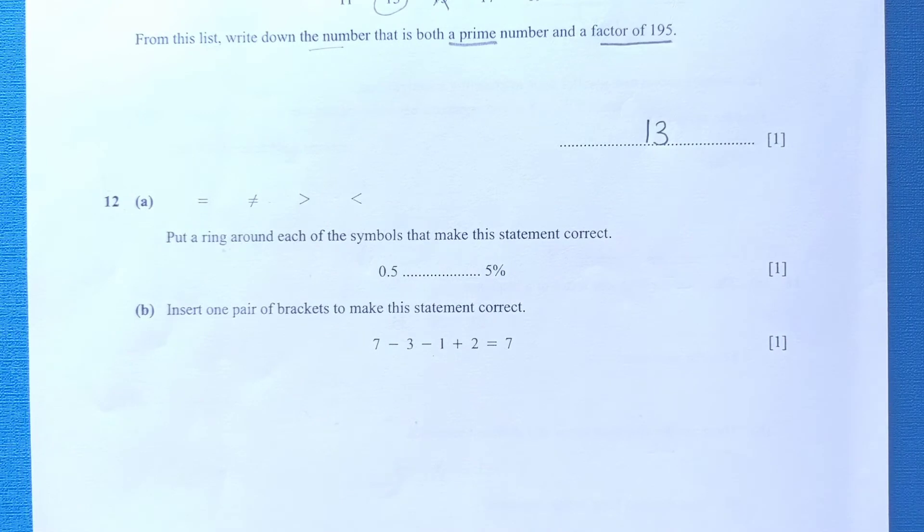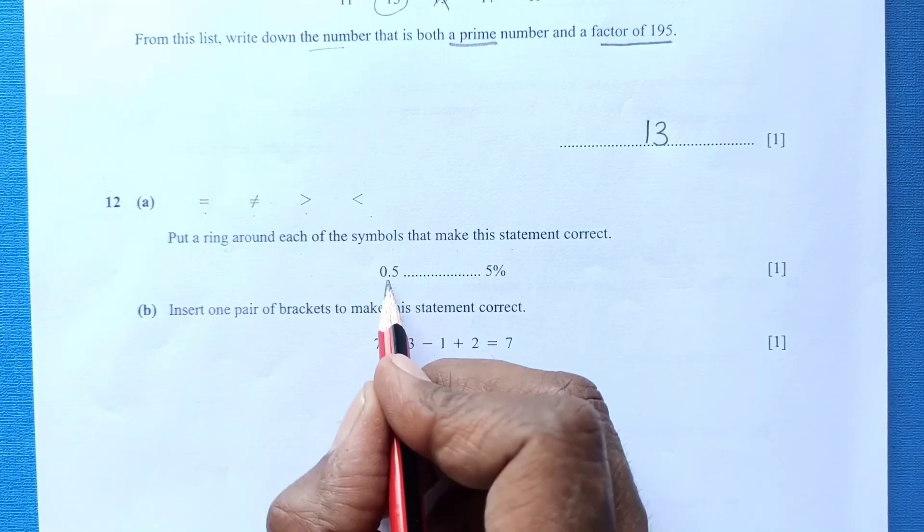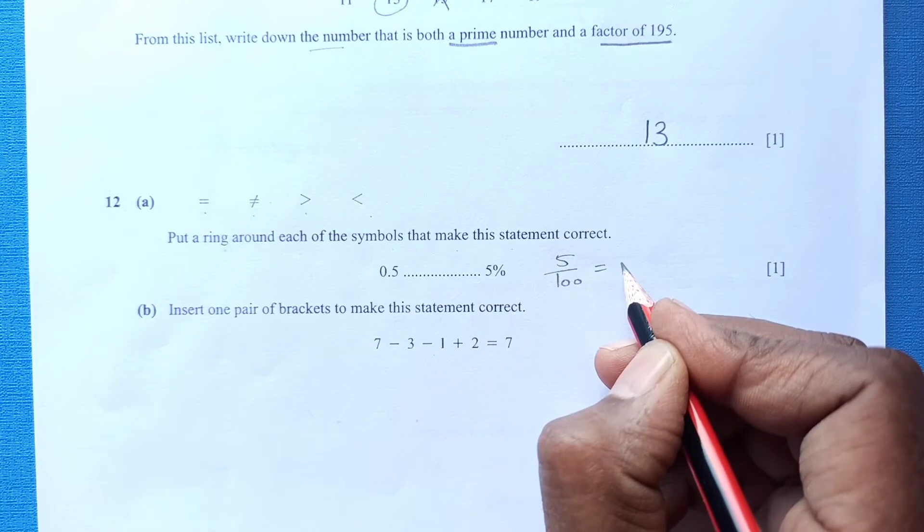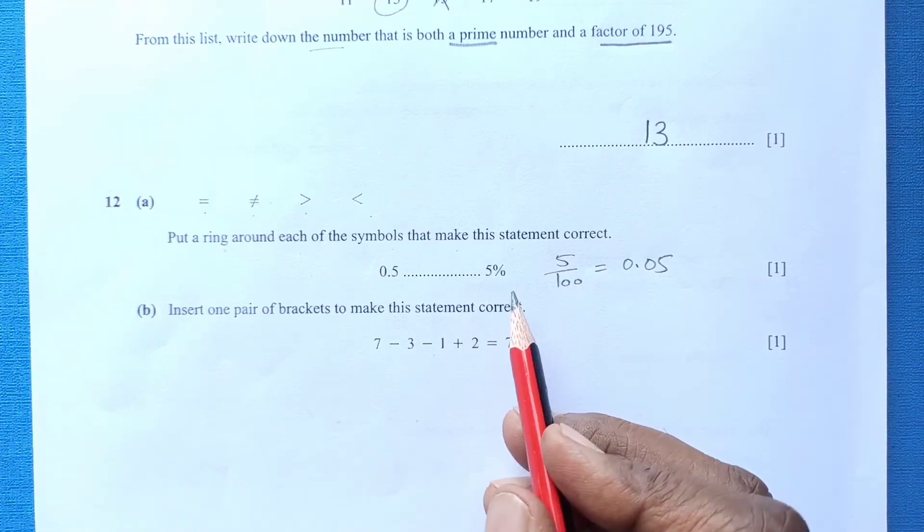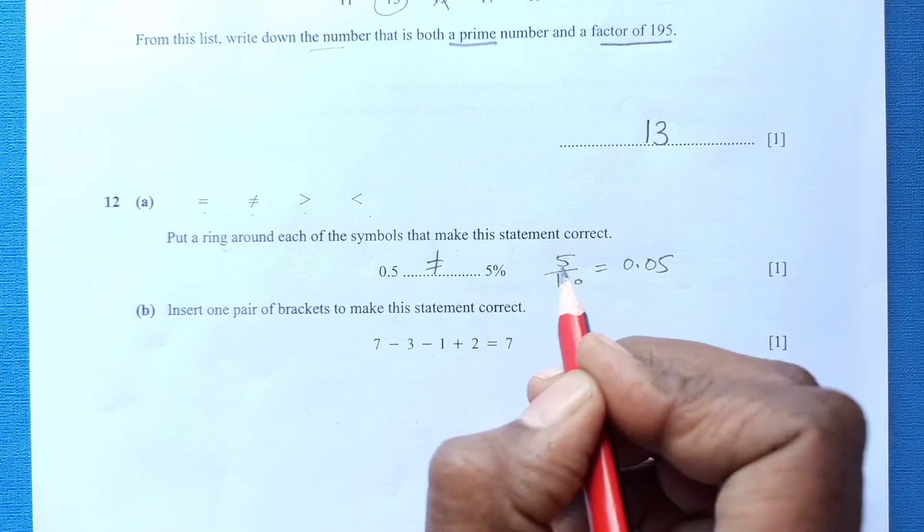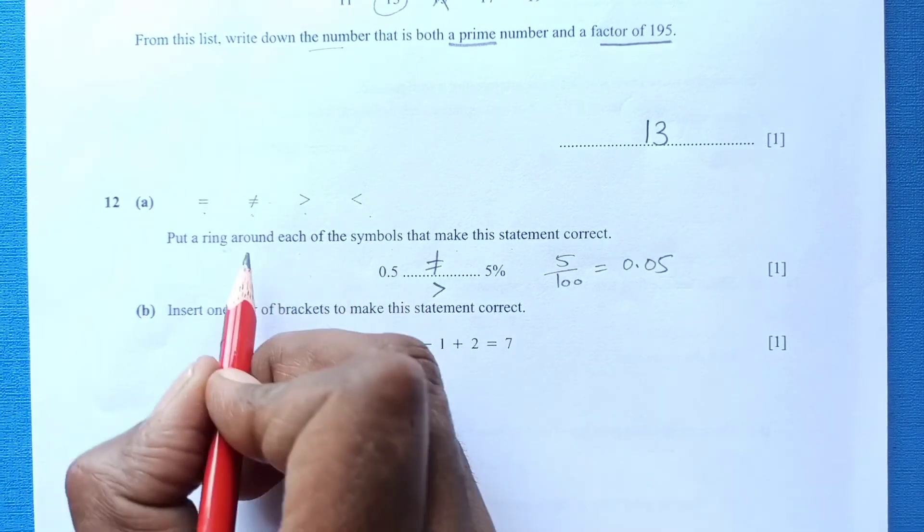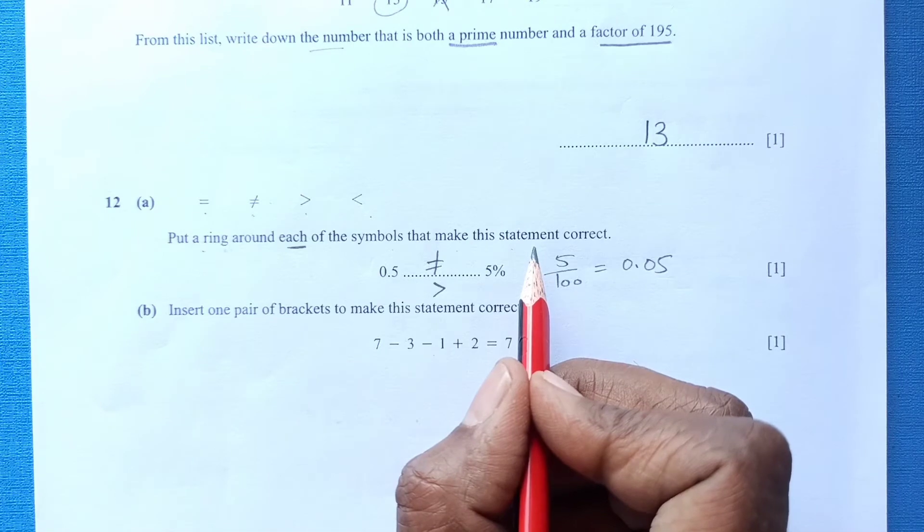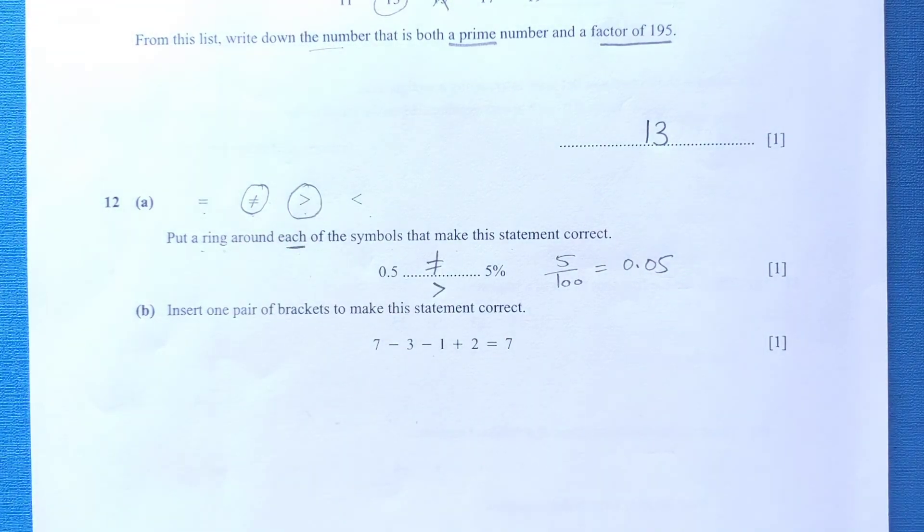Number 12: You can see some signs here. Equal, not equal, greater and less than. Put a ring around each symbol that makes the statement correct. This is 0.5. This is 5 over 100, 5%. When you write into decimal, this will be 0.05. Now 0.05 is less than this one. We can have this number, we can even put here not equal to, or we can have this is greater than this number. We have to put both of them, because he said put a ring around each of these symbols that make the statement correct. We have to put ring on this one and this greater sign.